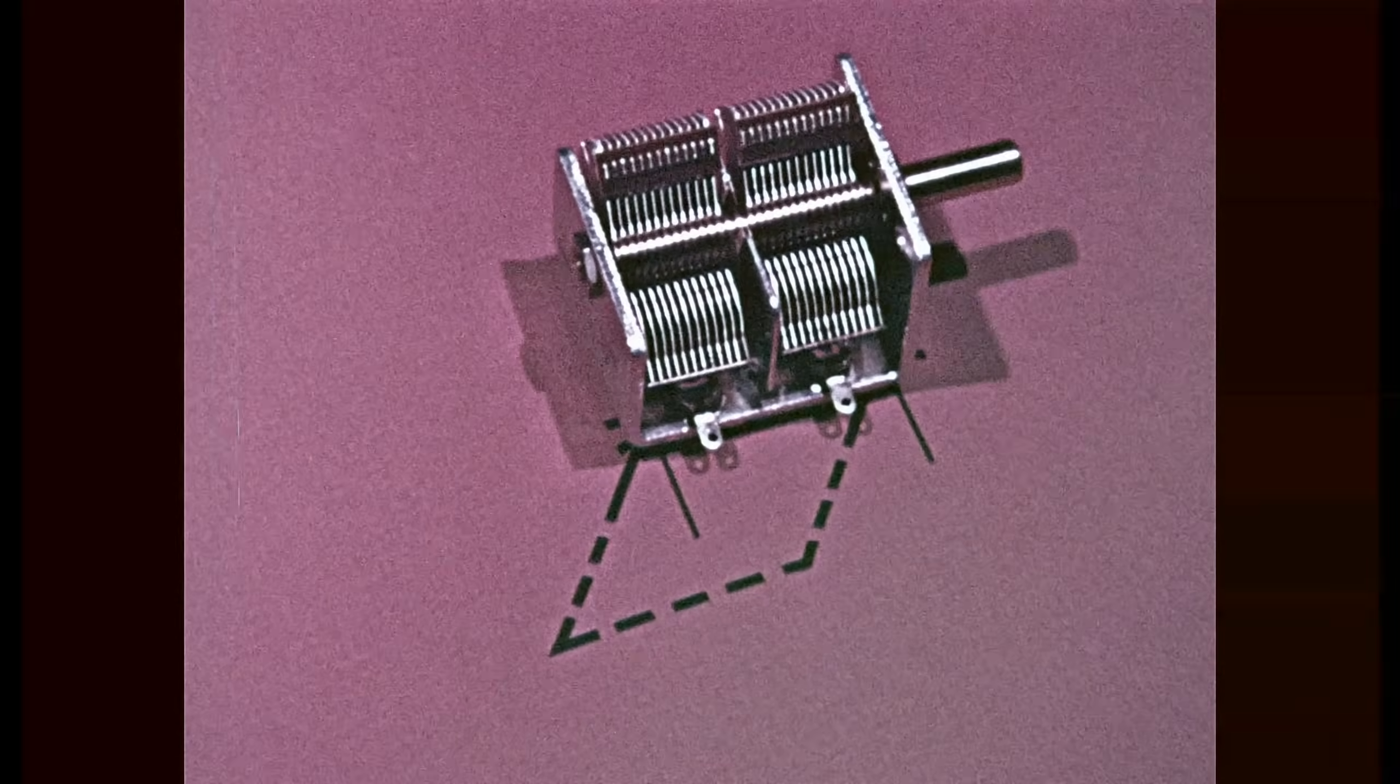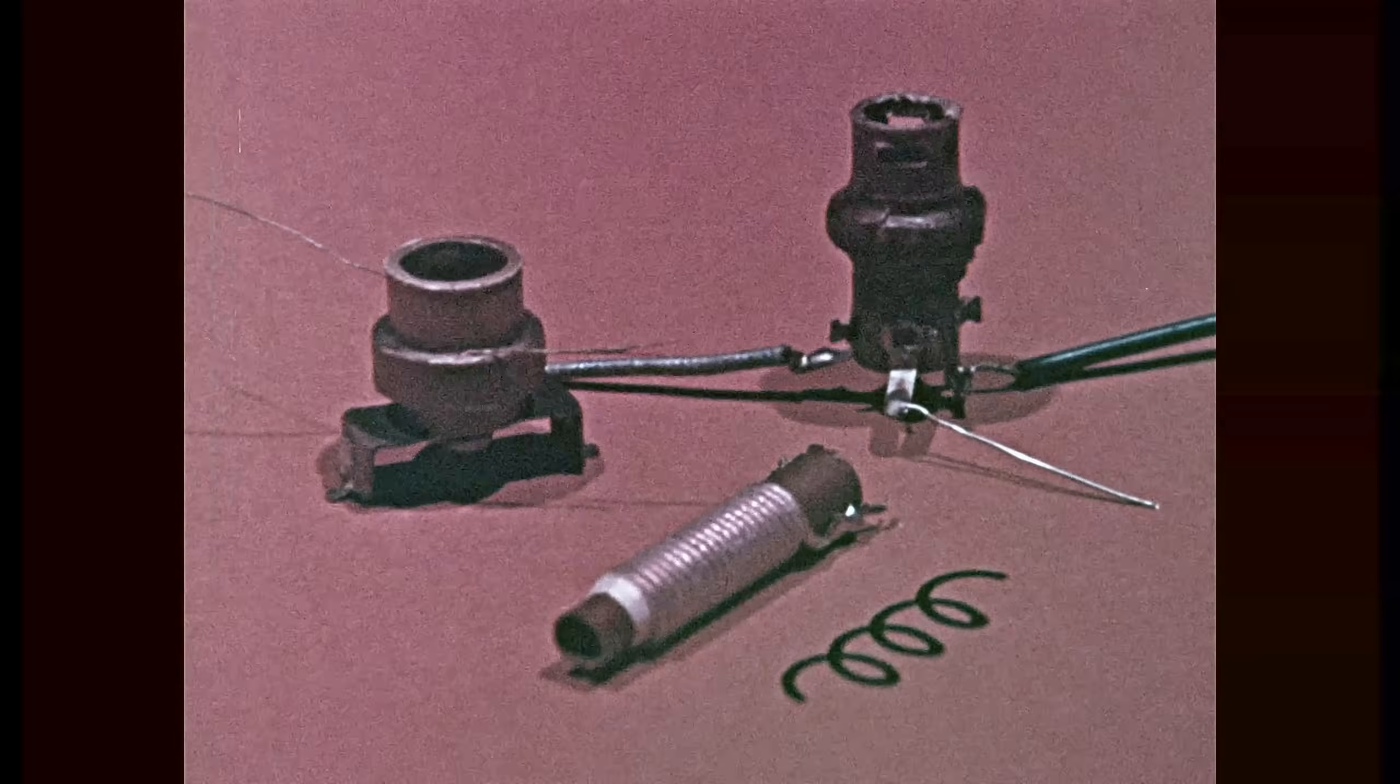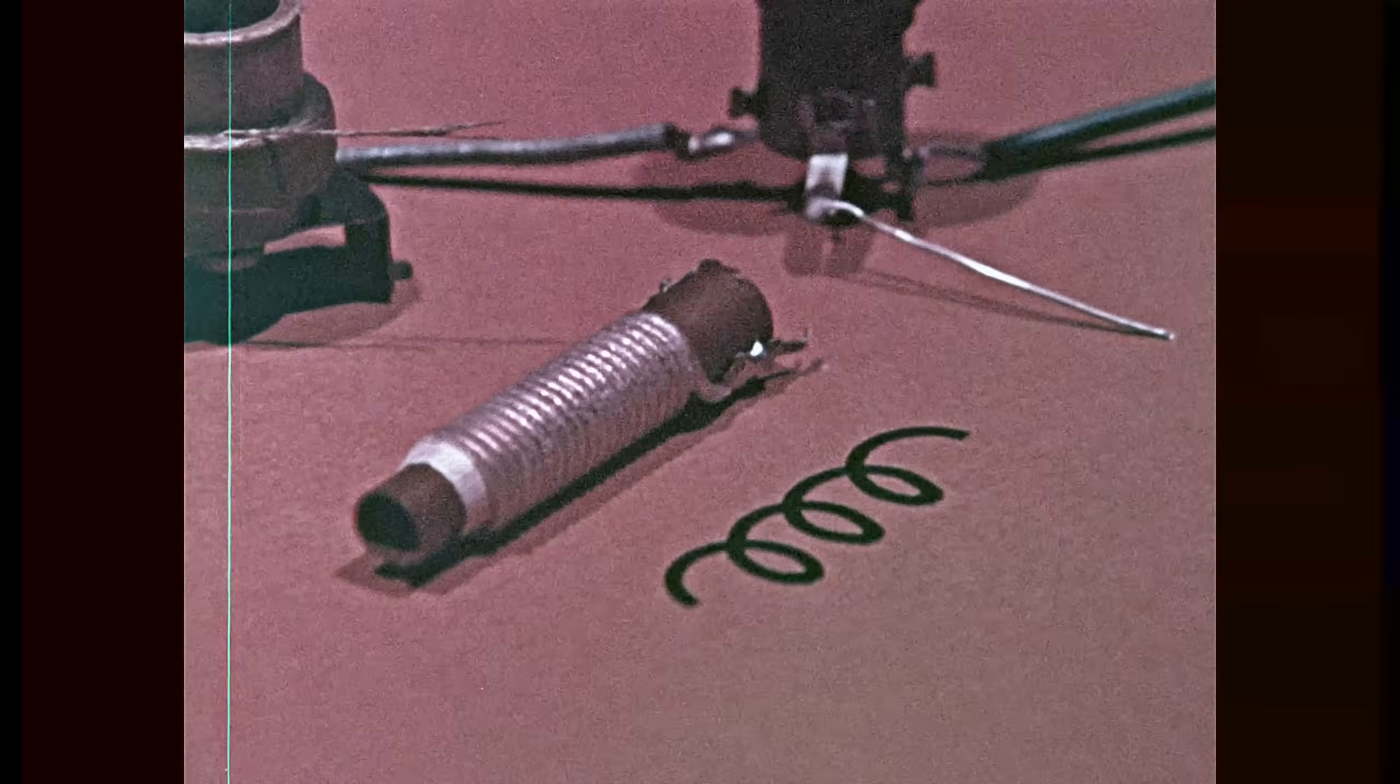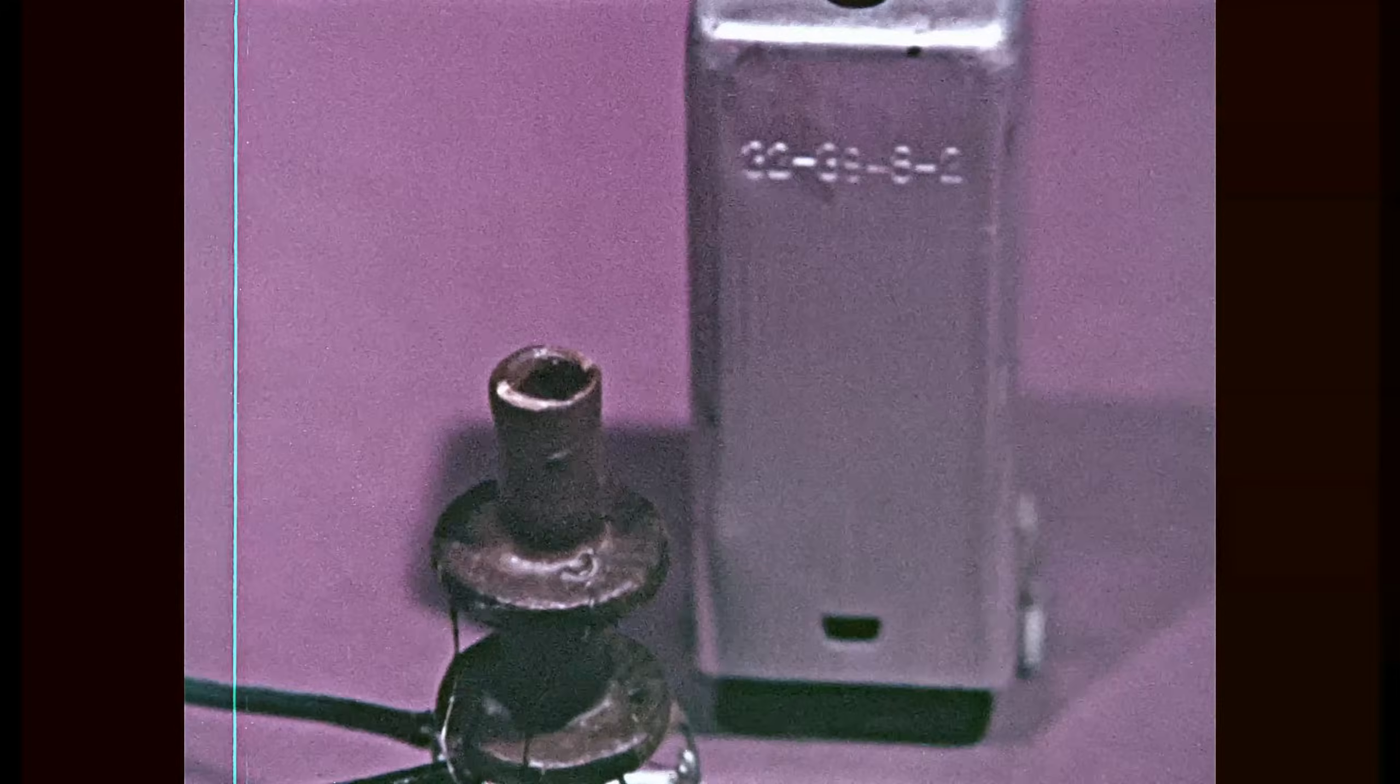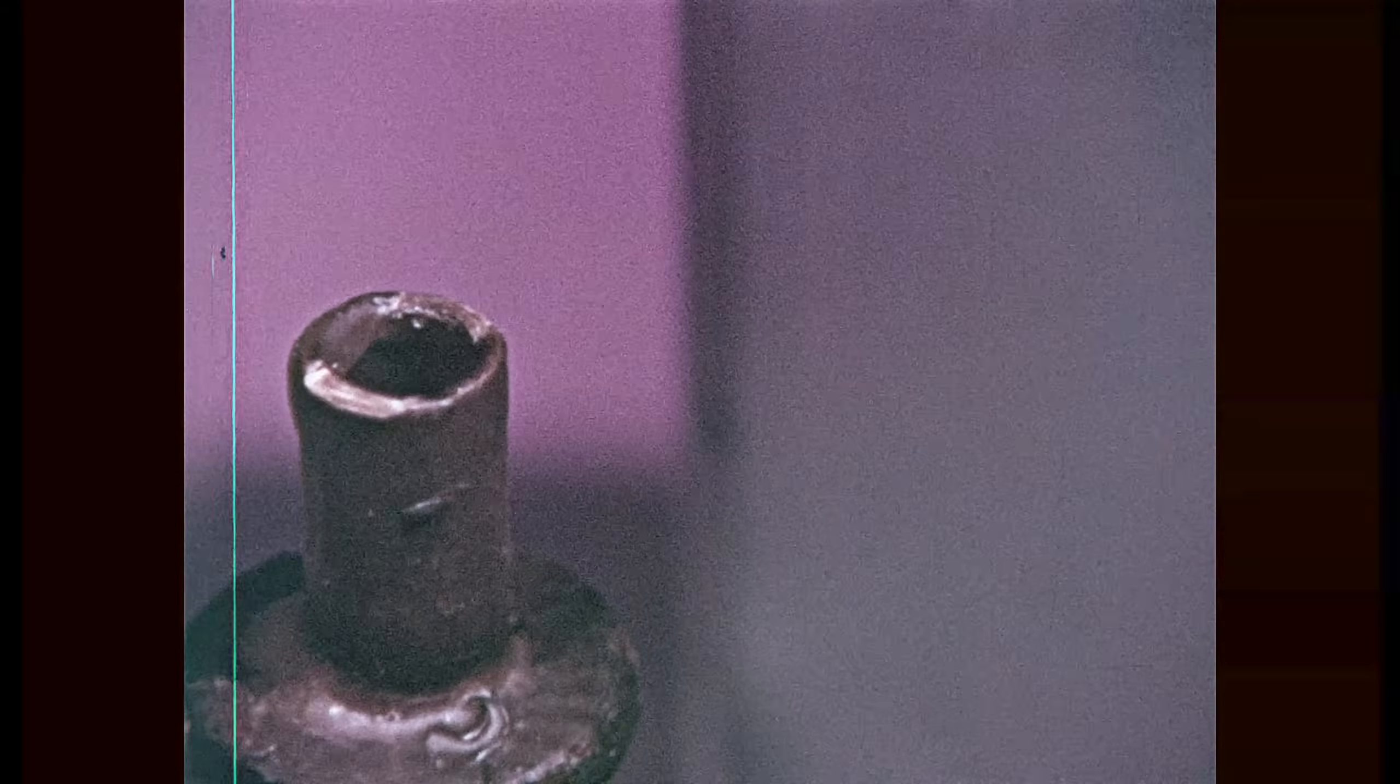An inductor is a coil of wire. It can create a magnetic field. Direct current will pass more easily through a coil than alternating current. Two or more coils combined can form a transformer, a radio frequency transformer coupled in air, or tuned with an iron core.